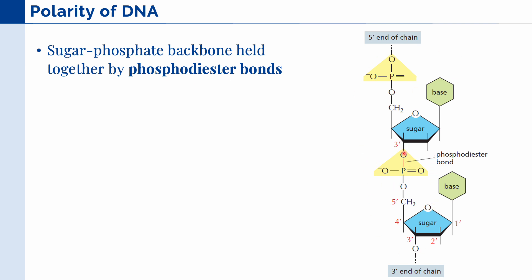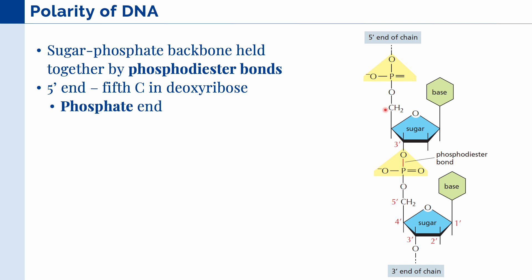The phosphodiester bond occurs between a phosphate and an oxygen. Speaking of polarity, the two ends of the DNA are different. First, we have the five prime end, which is called the five prime end because it ends with the fifth carbon in the deoxyribose sugar. So if we count the number of carbons, we have one, two, three, four, and the fifth one is here.